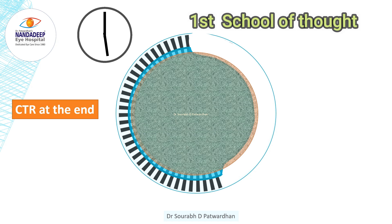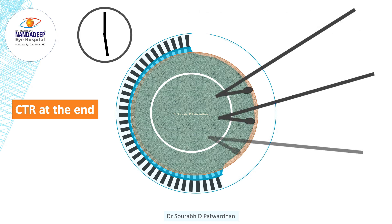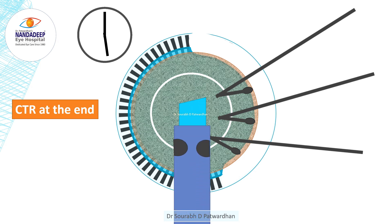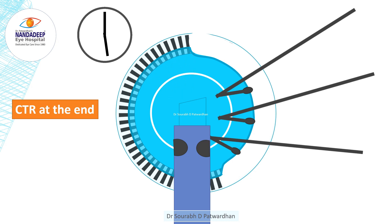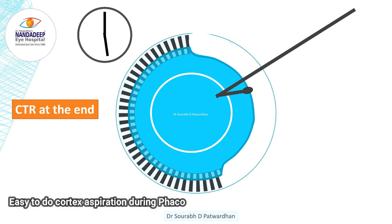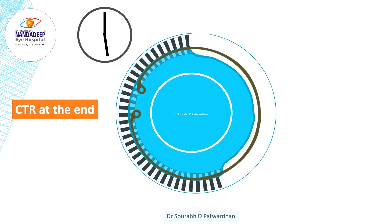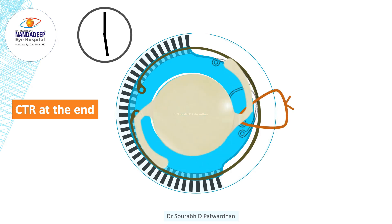As far as the steps are concerned, there are two schools of thought. The first school of thought is that we should put CTR at the end. So first we do CCC followed by capsular hook insertion which supports the subluxated area of the lens. This is followed by FACO emulsification and cortex removal. Because we have not put CTR, the cortex removal is quite easy and it is not trapped by capsular hooks. Then we release the capsular hooks one by one, followed by CTR insertion in the bag, and then we implant a CT segment to support the rest of the lens and suture it to the sclera.